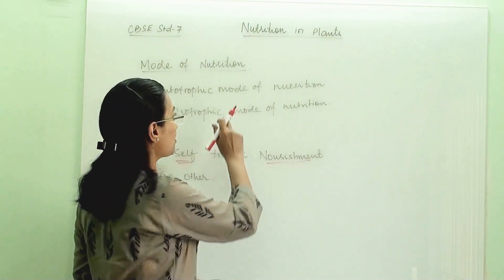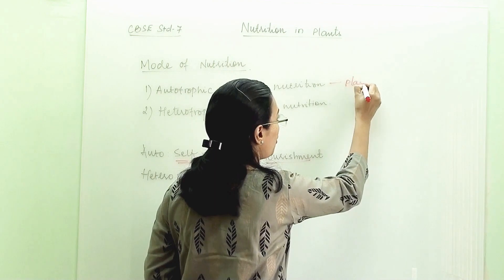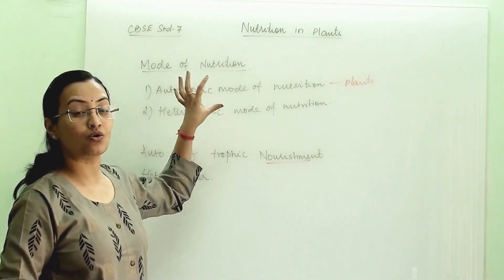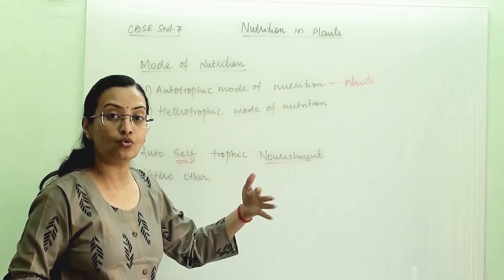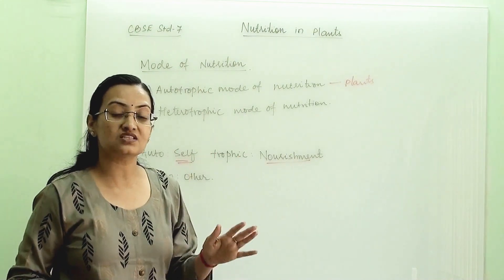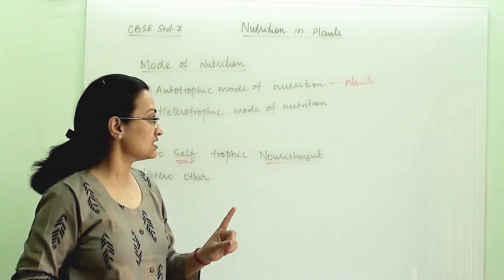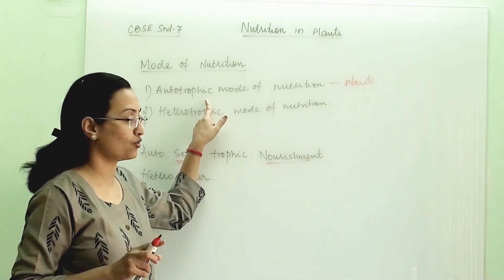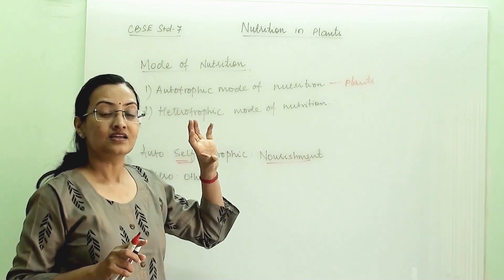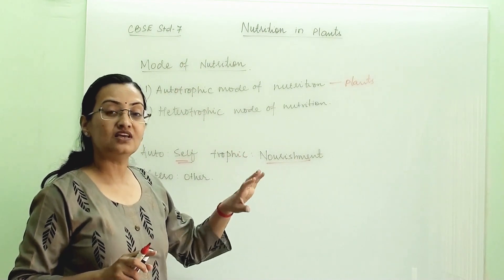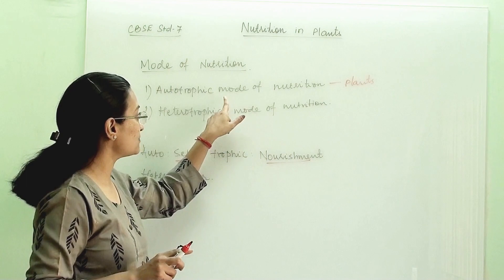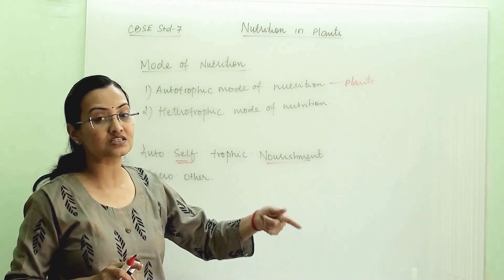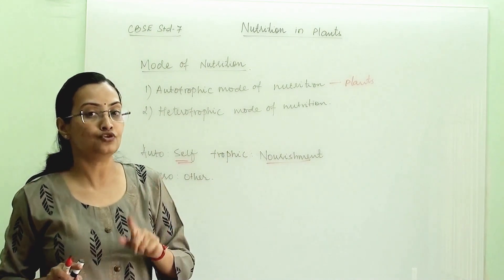When we talk about autotrophic mode of nutrition, all the plants are termed as autotrophs because they are preparing their own food via the process called photosynthesis. They prepare their own food with the help of simple substances, and their mode of nutrition is autotrophic mode of nutrition.